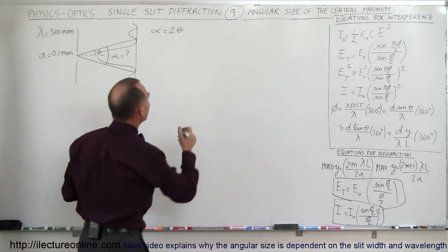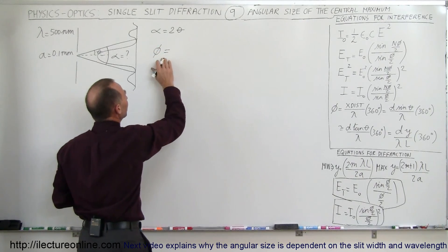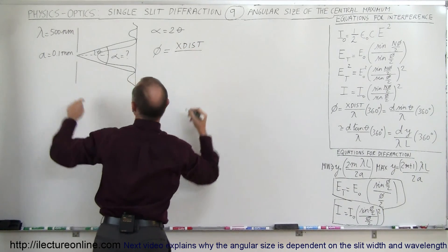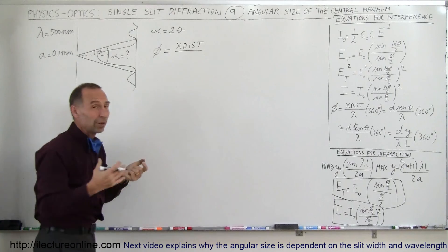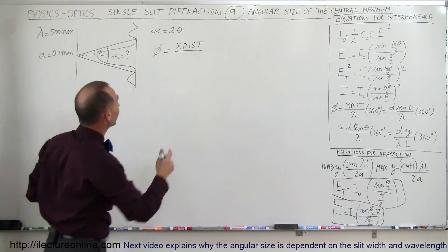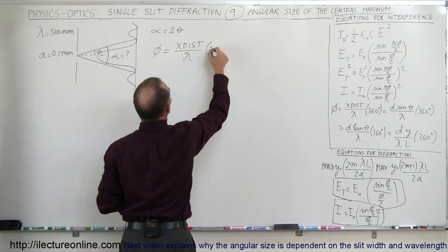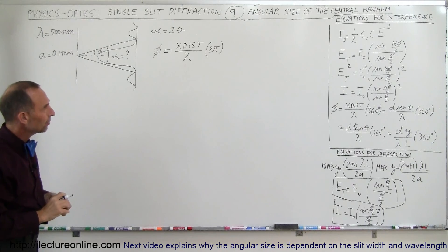We also know there is a relationship between the phase difference and the lookup angle. We know that the phase difference is equal to the extra distance traveled by the half portion of the wave with respect to the bottom portion of the wave, divided by the wavelength times 360 degrees or 2 pi. Let's do it in terms of radians for now, 2 pi radians.